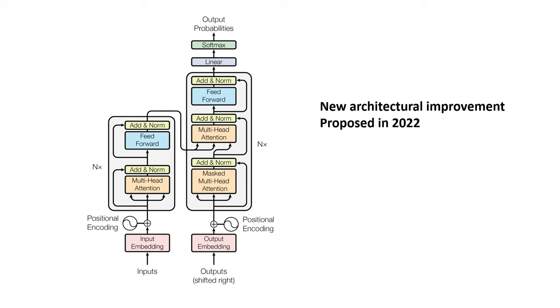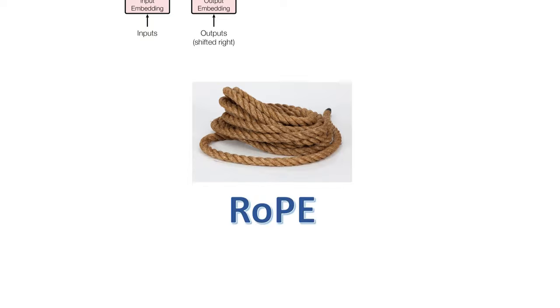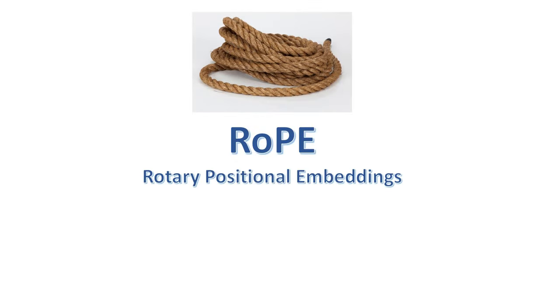And this improvement has quickly been adopted into many language models, such as POM, GPT-Neo and GPT-J by EleutherAI, and Meta's Lama 1 and 2 models. And this new method is called ROPE, which stands for Rotary Positional Embeddings.